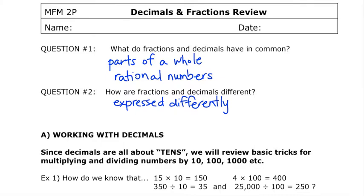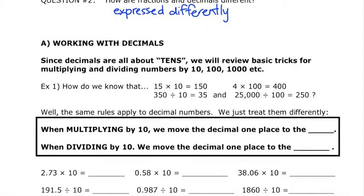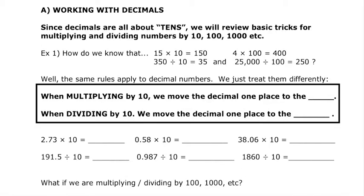Let's start by working with decimal numbers. The great thing about decimal numbers and values of tens — so tens, hundreds, thousands, and so on — is we can use simple basic tricks to make multiplying and dividing a lot easier when we're doing them by base tens. For example, 15 times 10: to multiply a whole number by a base of 10, we just write that number and tack on how many zeros. For 10, we're adding one zero; for 100, we're adding two zeros.